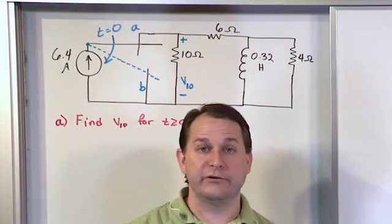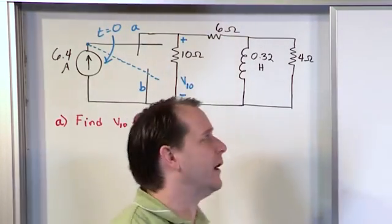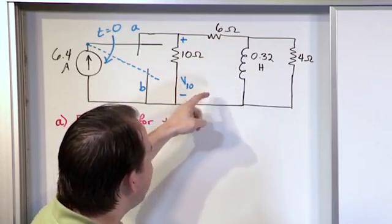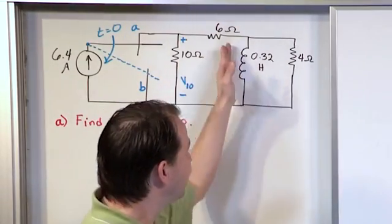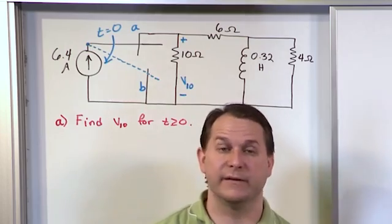The inductor, when the switch has been sitting for a long period of time, is just going to look like a short circuit. It's going to look like a wire. So the current is going to be flowing through the inductor and then back. None of the current's going to make it over here to the 4 ohm resistor because of the short circuit that's effectively here. That's what the circuit's going to look like when it's in position A.